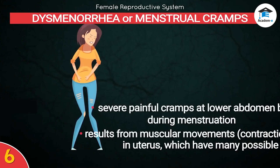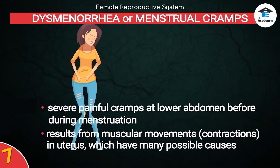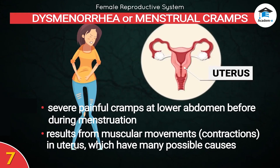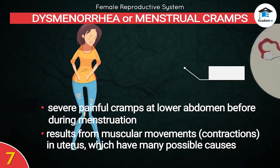Dysmenorrhea, or menstrual cramps, refers to severe, painful cramps at the lower abdomen before or during menstruation. The pain results from muscular movements in the uterus, which have many possible causes.